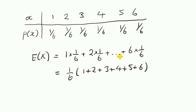1 over 6 is a common factor, we can take it out, and then we just add up the numbers, and that comes to 21. We can write this as 3 and a half. That's the answer.